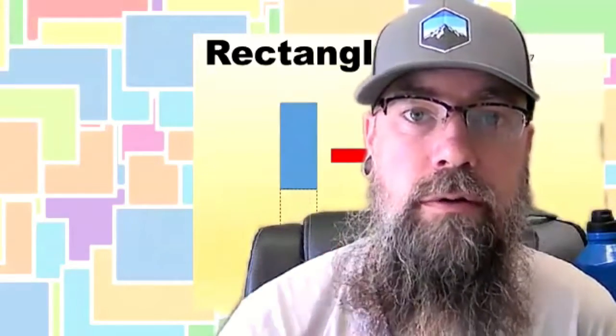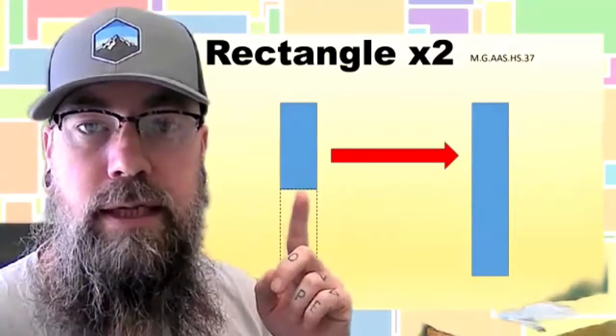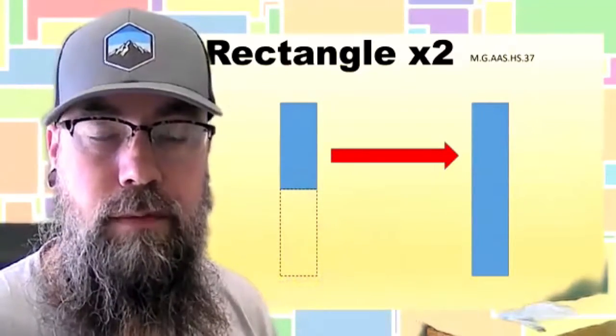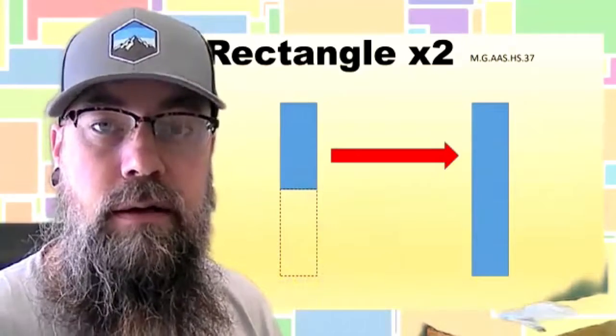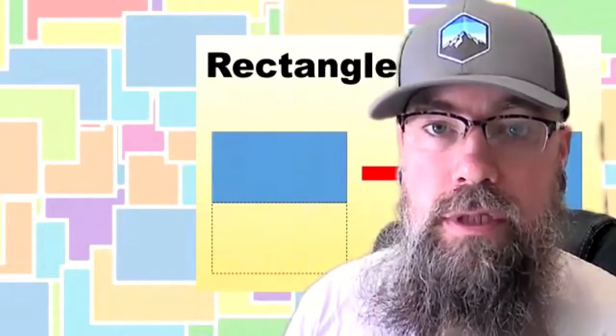First, we're going to start with this rectangle right here. I'm going to take this and we're going to double it. So if I double this rectangle, that means I'm going to have two of them. If I put them side by side to double them, I'll get a rectangle like this.